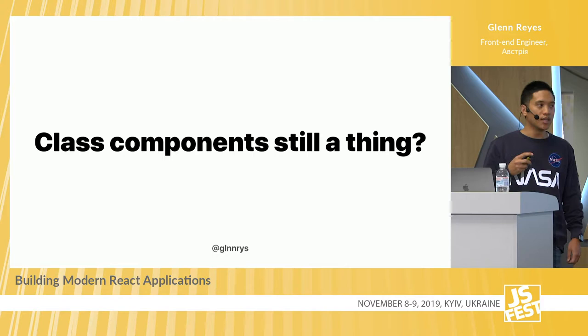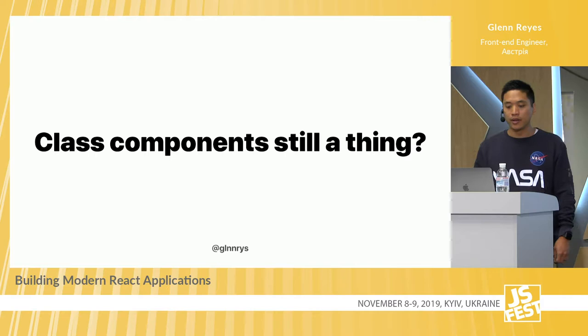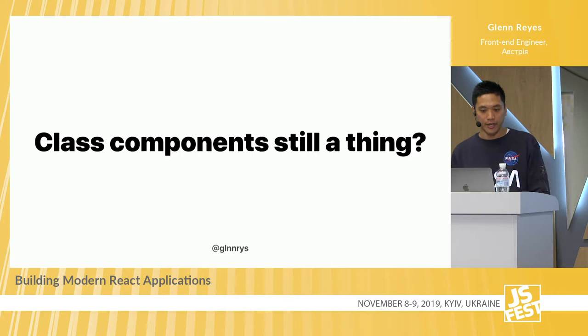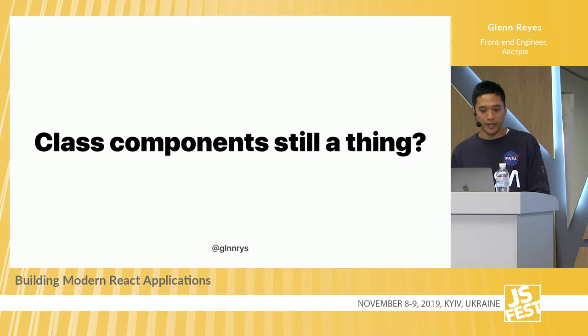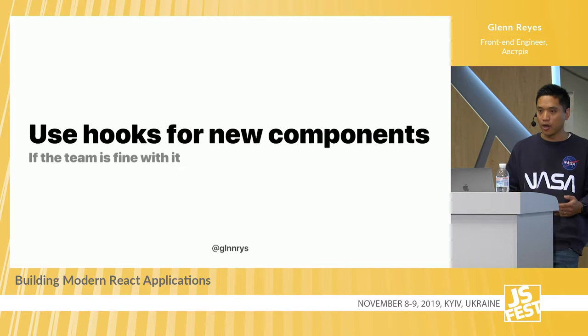With states and lifecycle methods now available in function components, what happens to class components? The answer is: yes, they still are a thing, and they will stay. There are still valid use cases like error boundaries and componentDidCatch. You should not replace every component with hooks. It's probably better to use hooks only for new components — try hooks out and see how they work for your application. I would keep existing class components as they are, and only rewrite them into hooks if it makes life easier.